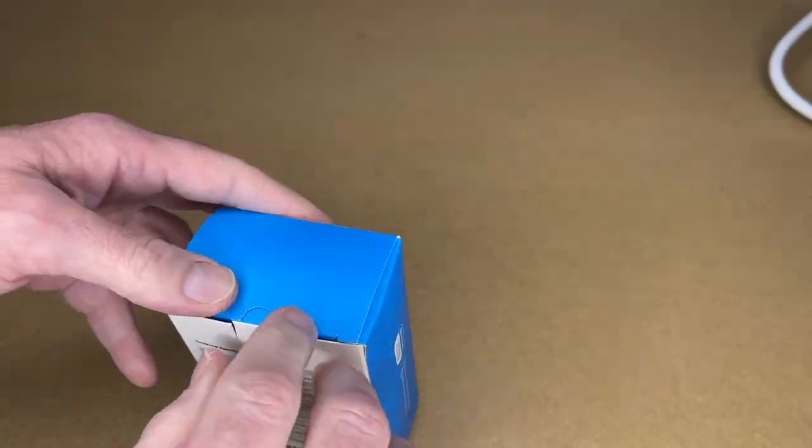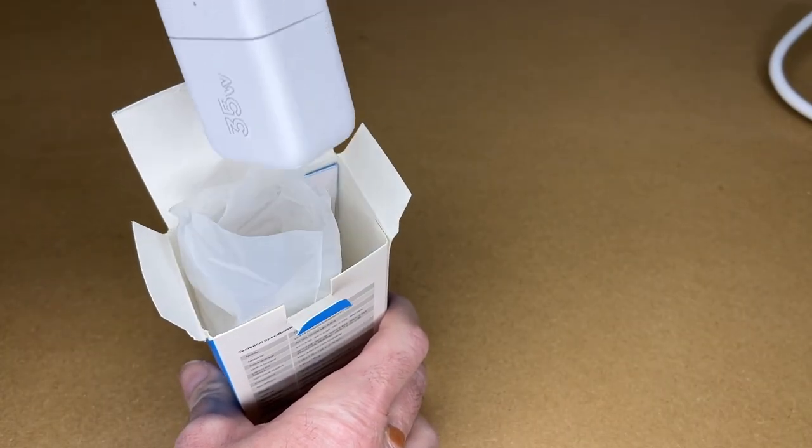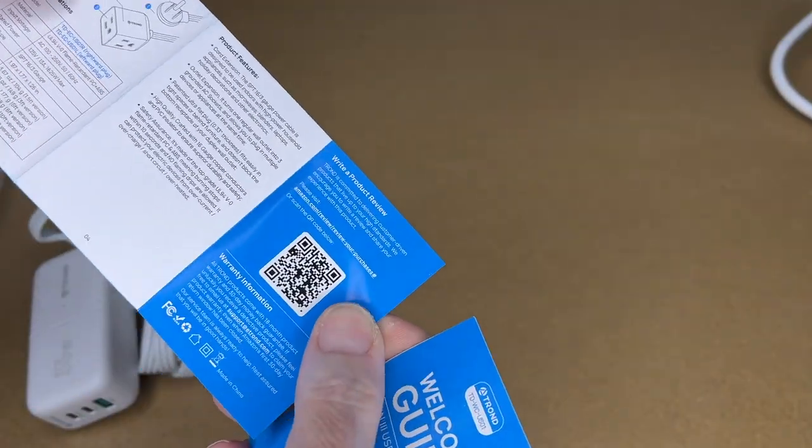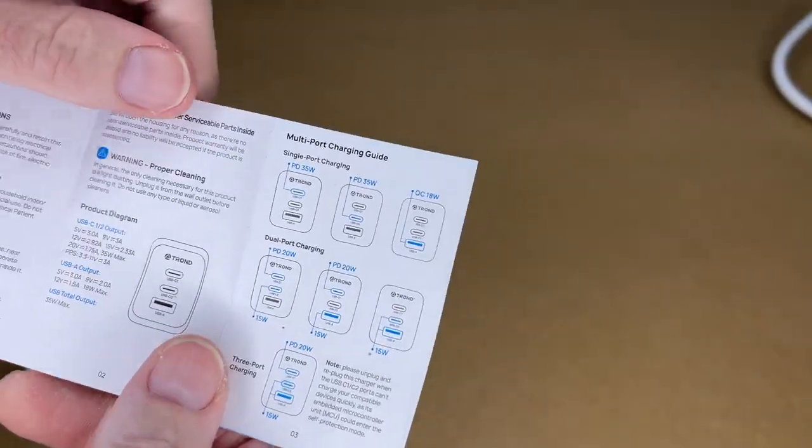Let's get this open. Here we have the extension cord and charger. We have a welcome guide. This is going to have a lot of the stuff we saw on the back and this is for the extension cord. This is for the charger. This is what I'm looking for.